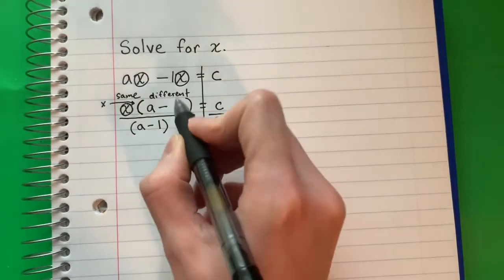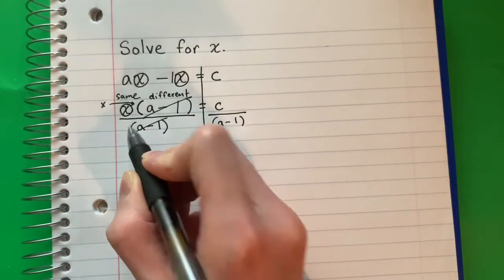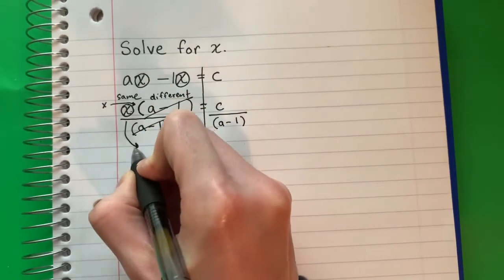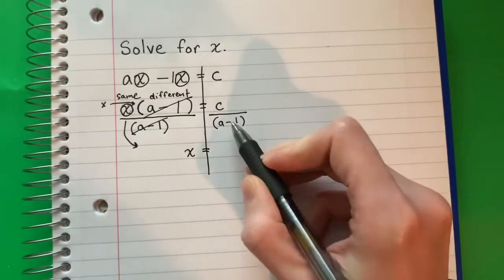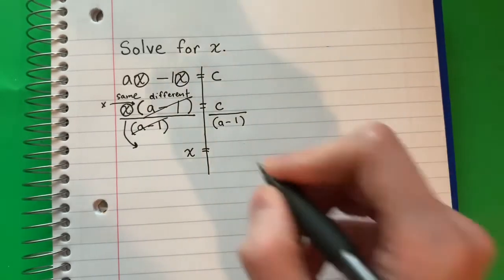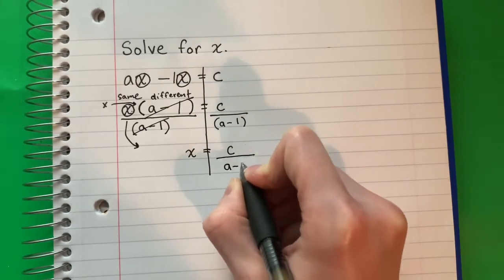Which one cancels? A minus 1 divided by A minus 1 - that is 1, and it cancels. I'm going to copy the X. Equals. What is C divided by A minus 1? That's the same: C divided by A minus 1.